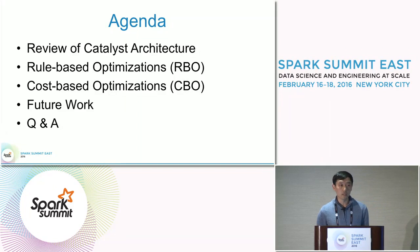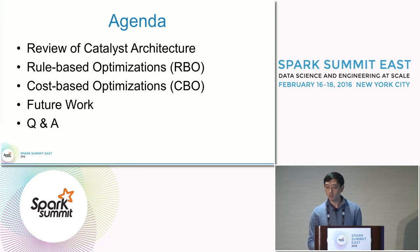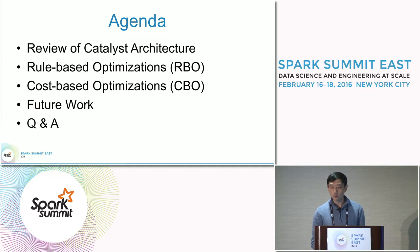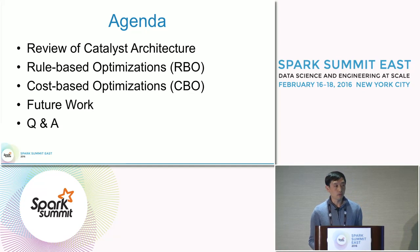Here's the agenda of today's talk. First, I will give a quick review of the Catalyst framework, which Spark SQL was built on top of. Next, I will give a detailed description of two kinds of optimization we introduced to the Spark SQL optimizer. We call them RBO and CBO, which stand for rule-based optimization and cost-based optimization, respectively. I will also introduce something we plan to implement in the near future. We will end the talk with Q&A.